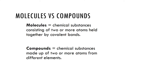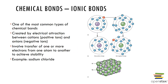Molecules are different from compounds. A molecule is a chemical substance consisting of atoms of one or more elements held together by covalent bonds. A compound is a chemical substance made up of two or more atoms from different elements. Both molecules and compounds can participate in chemical reactions. Let's examine some types of chemical bonds, starting with ionic bonds.